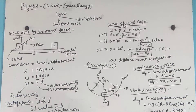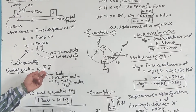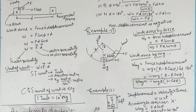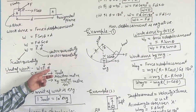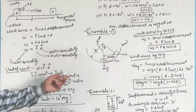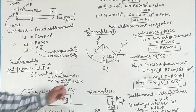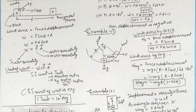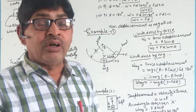Now, the unit of work. Work is measured in two systems. The SI unit of work is Joule. It can be expressed as Newton times meter, or equivalently kg·m²/s². The CGS unit of work is erg, and one Joule is equal to 10 to the power 7 erg.